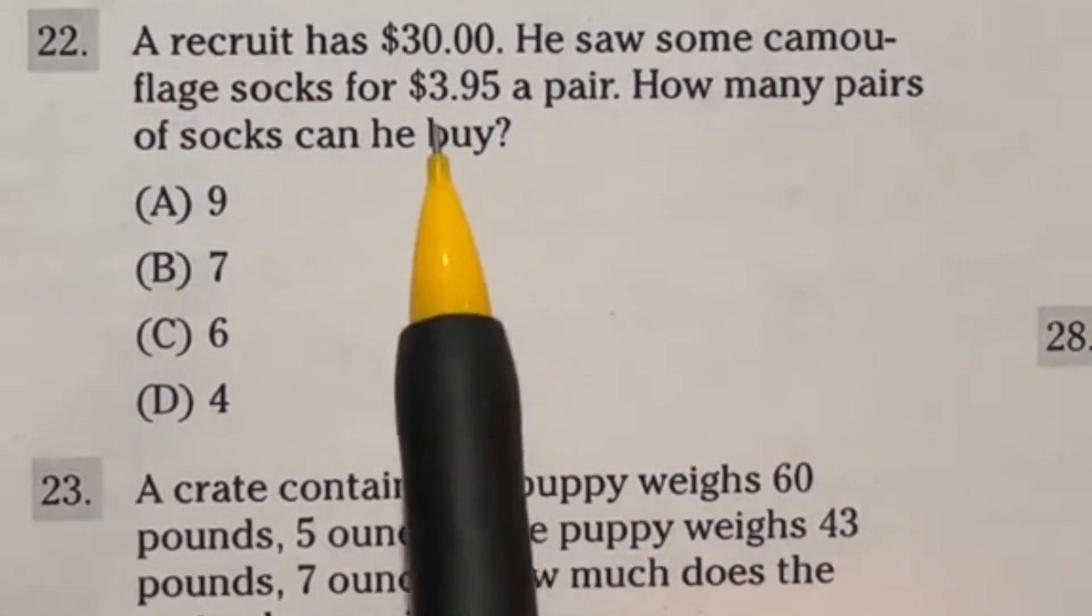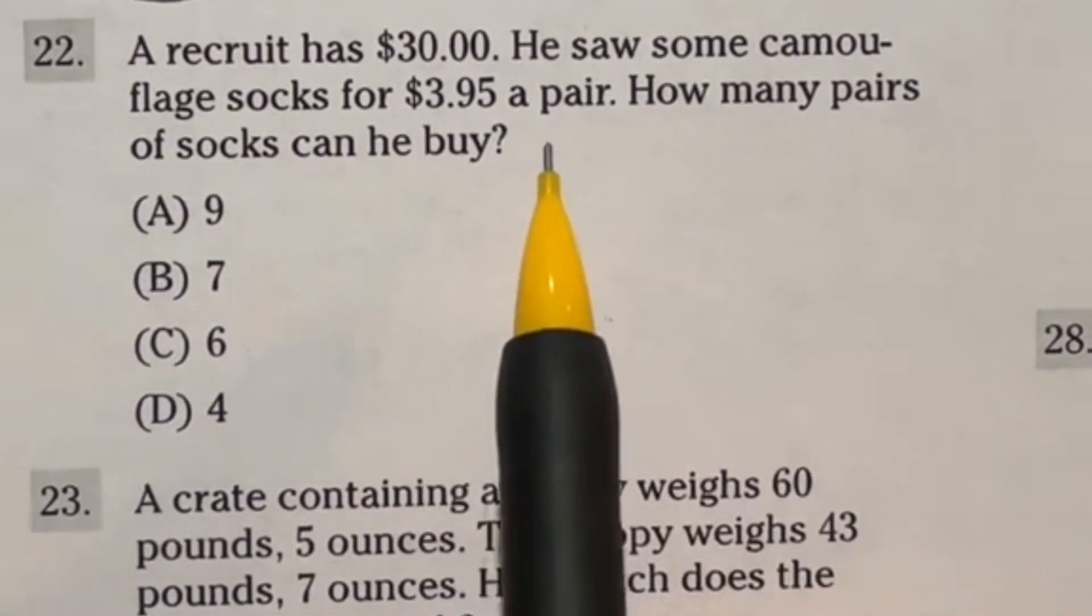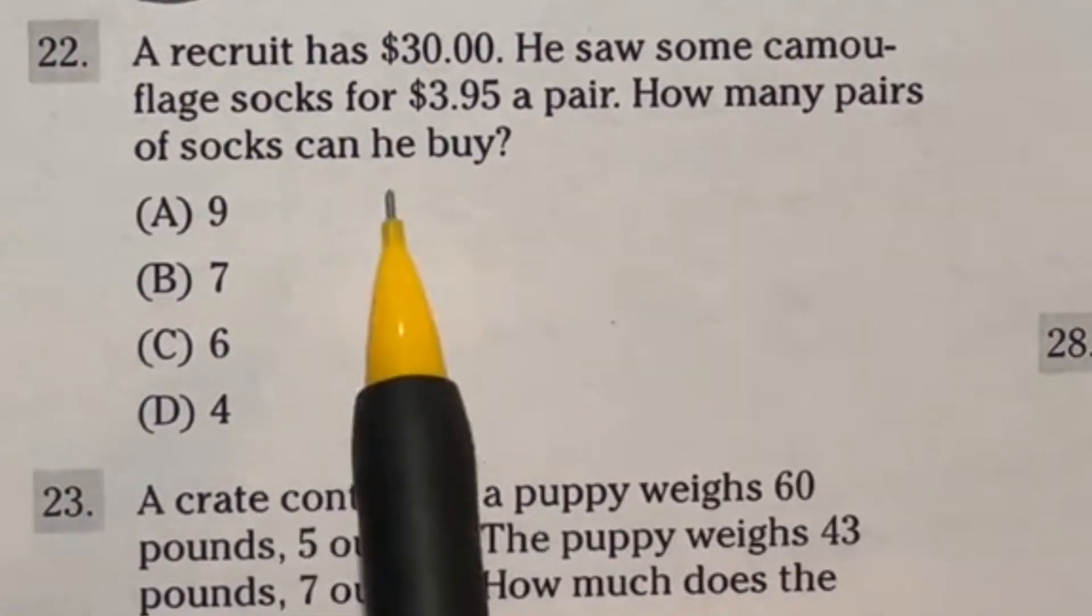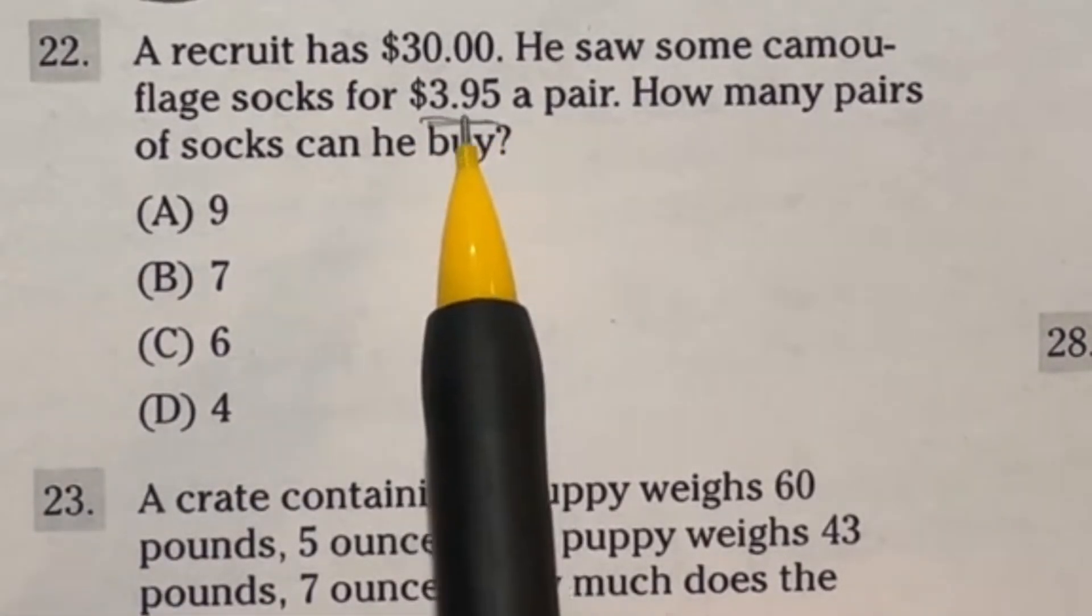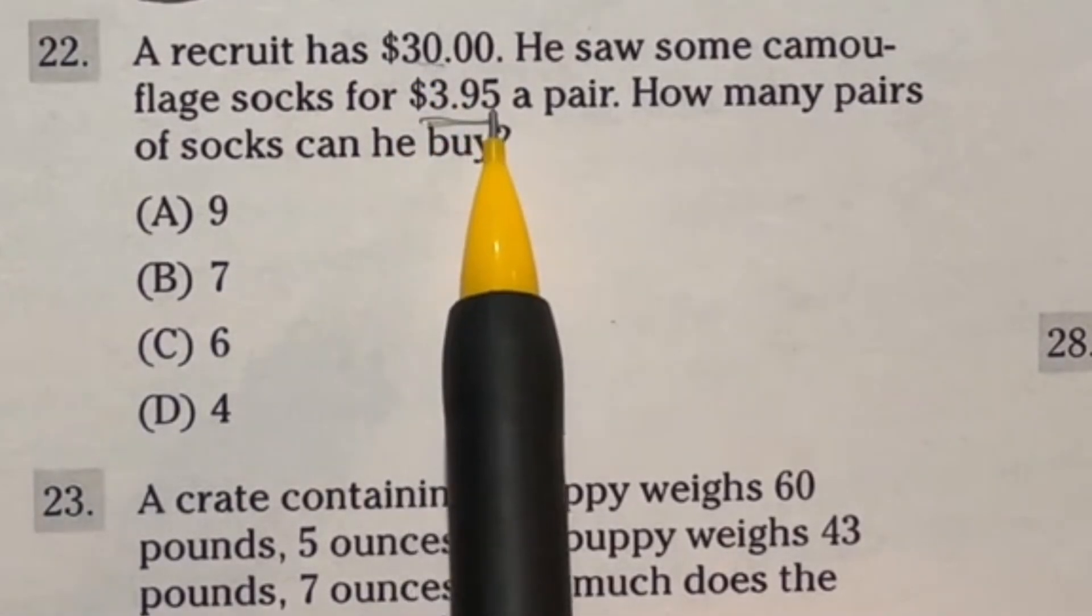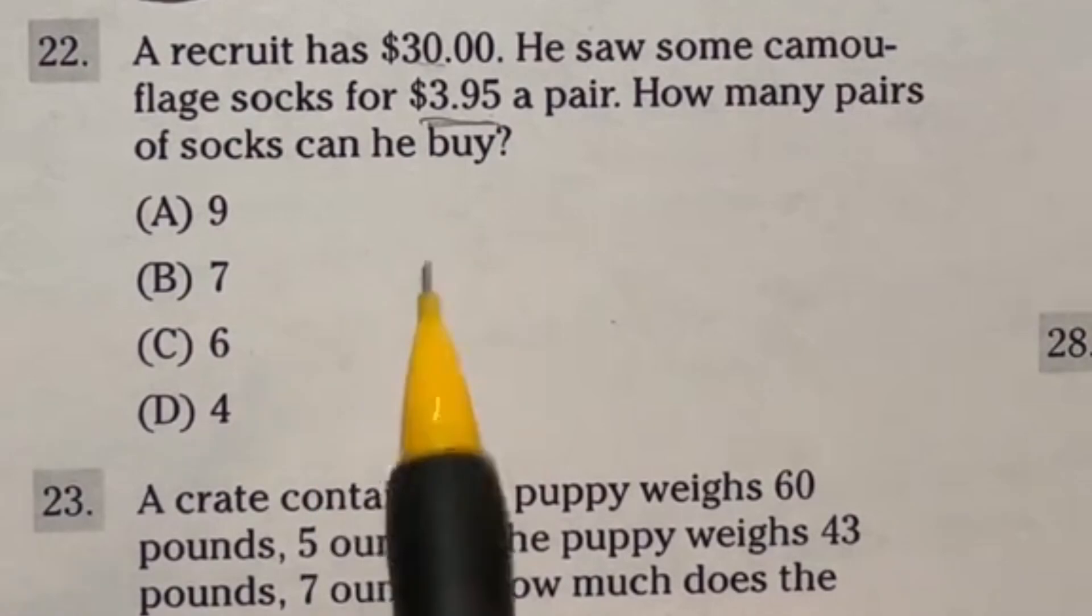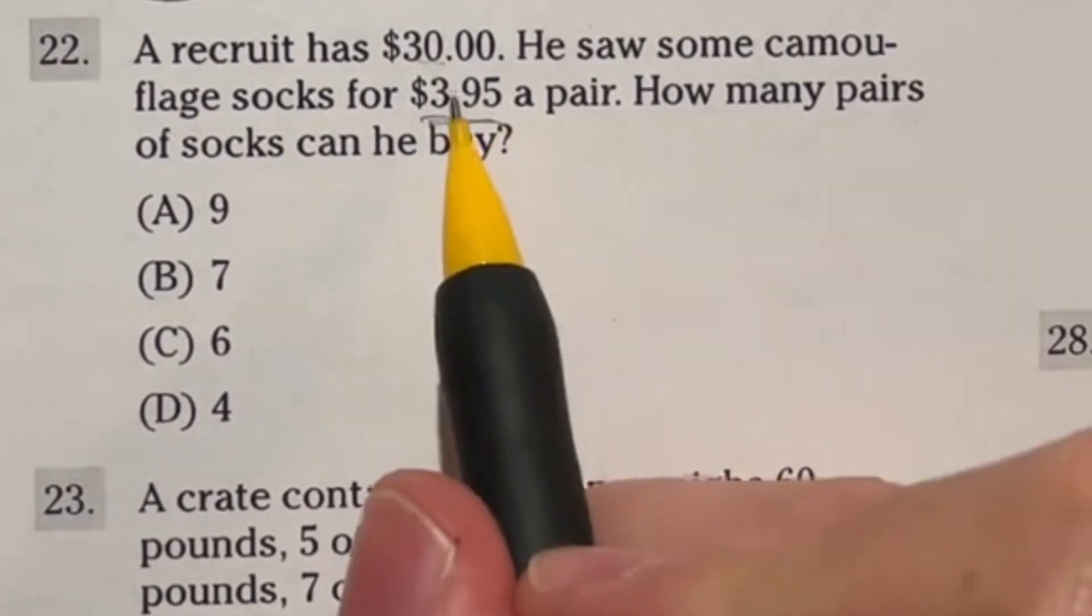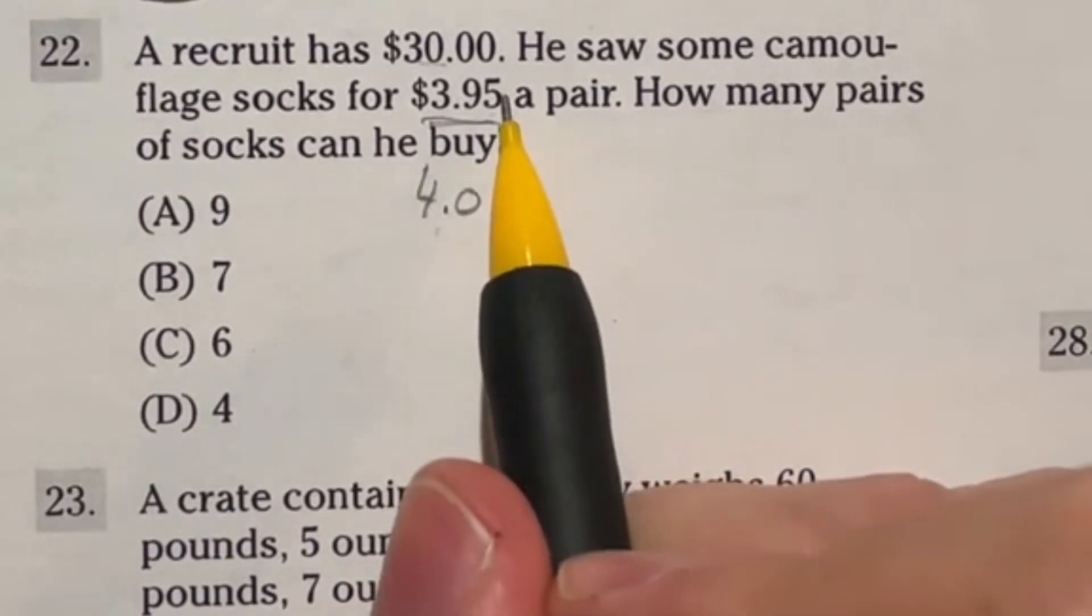22 says a recruit has $30. He saw some camouflage socks for $3.95 a pair. How many pairs of socks can he buy? So first and foremost, looking at this $3.95, we have to essentially do 30 divided by 3.95. But here's the deal, like 3.95, we don't know what that is on top of our head quickly. There's no calculator here. And the name of the game is speed. So we're just going to assume that this is 4 off the bat.